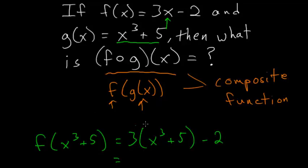And now we just have to simplify, distributing this 3 to each of these terms. So we have 3x cubed plus 15 minus 2, and 15 minus 2 is 13, so we have plus 13.